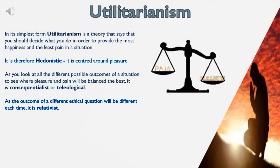Utilitarianism. In its simplest form, utilitarianism is a theory that says that you should decide what you do in order to provide the most happiness and the least pain in a situation. It is therefore hedonistic — it is centered around pleasure. As you look at all the different possible outcomes of a situation to see where pleasure and pain will be balanced the best, it is consequentialist or teleological.